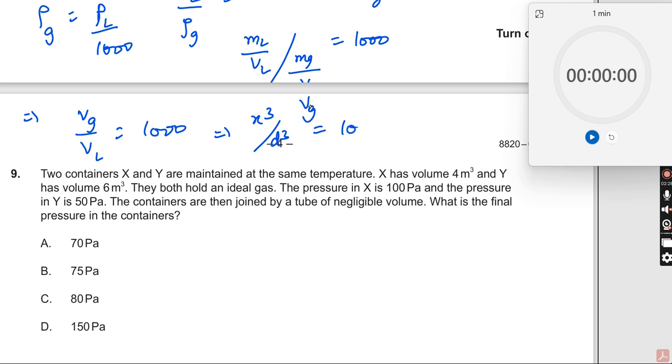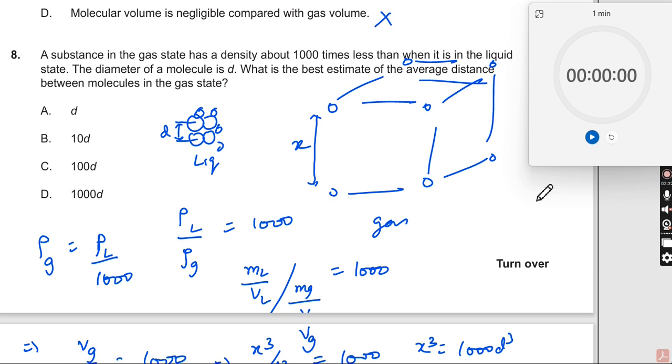So thus, x³ by d³ is equal to 1000. x should be equal to 1000 times d³, or x³ is equal to so much, or x should be equal to 10 times d. So the answer is 10 times d, which is the right answer, which is B over here. Okay, let us move on to the next.